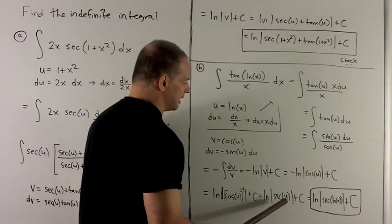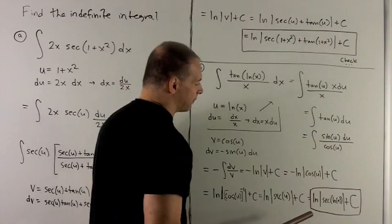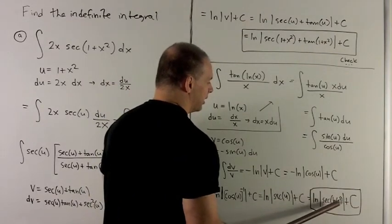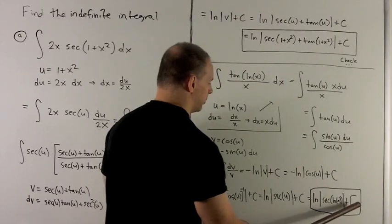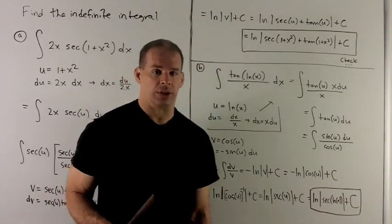And then I just put back in for u, so we have natural log absolute value of sec(ln(x)), and then whole thing plus a constant. Again, I'll leave the check to you.